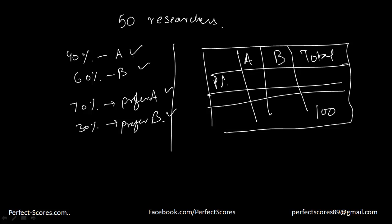These are the people who prefer A, these are the people who prefer B and this is the total. So 40 people will be assigned to A and 60 people will be assigned to B and the question says that 70 people prefer A and 30 people prefer B.